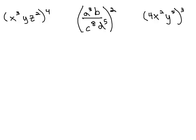In this first example, x cubed y z squared, we have a fourth power outside the parentheses. Because it's all multiplied, we can put that fourth power onto each factor, and as we do, we'll multiply the exponents.